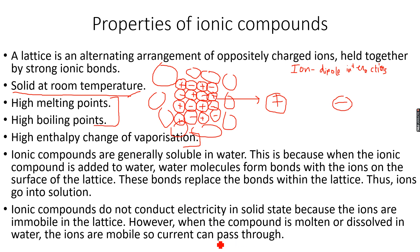The ionic compound cannot conduct electricity in the solid state because the ions are immobile. However, when the compound is molten — that is, when it has been melted — the bonds between the ions are broken and the ions are separated from each other, so now they can move. Similarly, when the ionic compound is added to water, these ions go into solution individually, and since they are no longer packed together, whether in molten form or in solution, these ions are mobile.